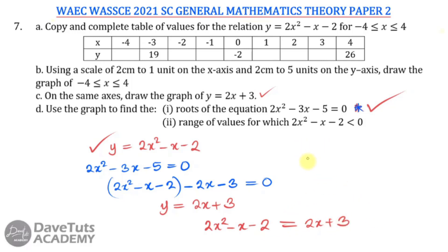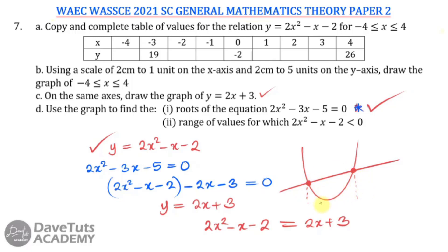You'll have the quadratic curve with a U-shape and the linear graph as a straight line. The point of intersection is what you need to trace down to the x-axis, and that gives you the root of the equation.